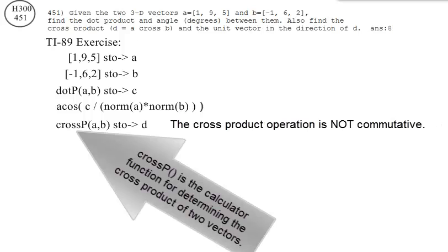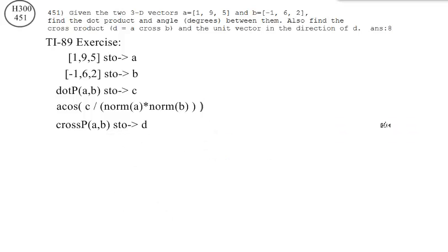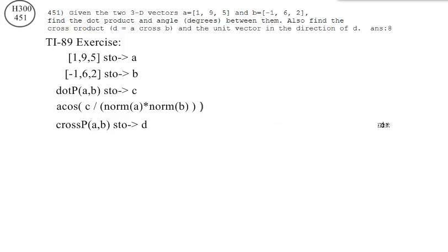The cross product operation is not commutative. A cross B is not equal to B cross A. A cross B produces a vector, not a scalar.